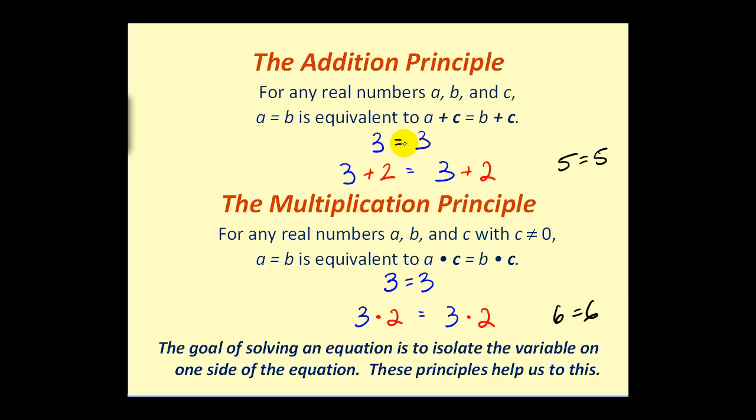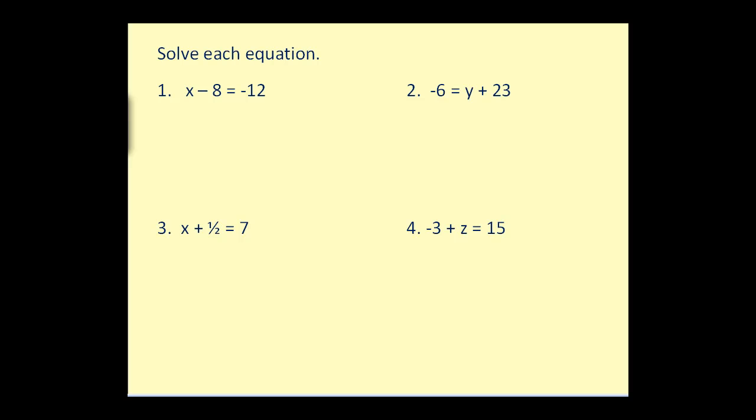So we're allowed to add or subtract a number from both sides of the equation and we're also allowed to multiply or divide both sides of the equation by the same value and it will maintain equality. So the goal of solving an equation is to isolate the variable on one side of the equation by using these principles. Now even though we could probably solve some of these mentally, we do want to develop the habit of showing the correct steps.